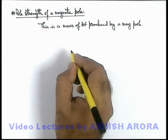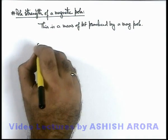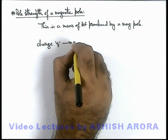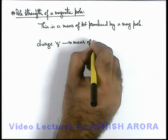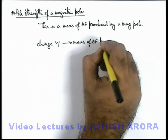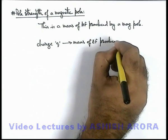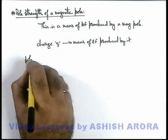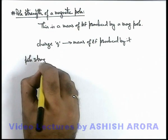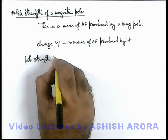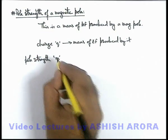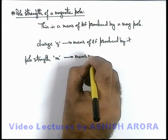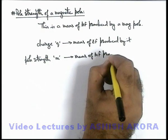Like in the case of electrostatics, we've discussed that a charge q — its magnitude gives us a measure of the electric field produced by it. Similarly, when we talk about the pole strength of a magnetic pole, this pole strength is denoted by the symbol m, and it gives us a measure of the magnetic field produced by it.